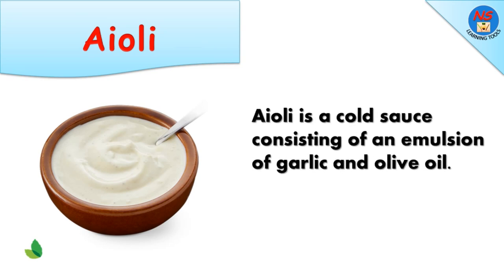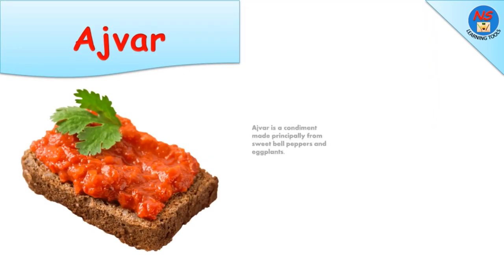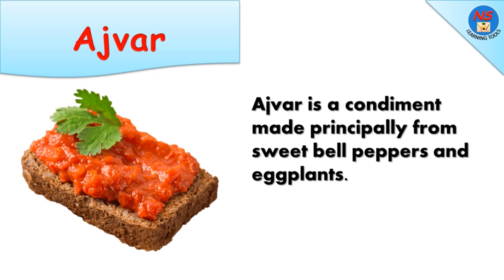Aioli is a cold sauce consisting of an emulsion of garlic and olive oil. Ajvar is a condiment made principally from sweet bell peppers and eggplants.